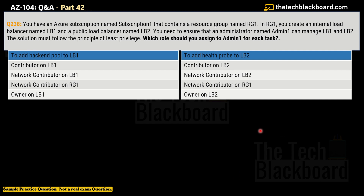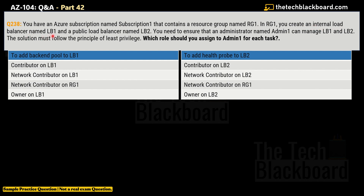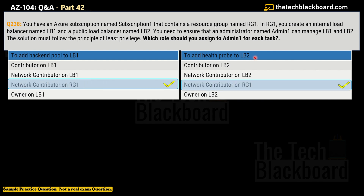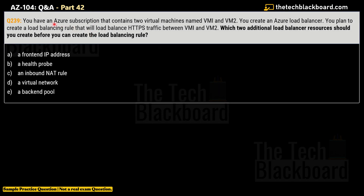Question 238: You have an Azure subscription named Subscription 1 containing resource group RG1, an internal load balancer named LB1, and a public load balancer named LB2. You need to ensure that an administrator named Admin 1 can manage LB1 and LB2, following the principle of least privilege. The two tasks are: add a backend pool to LB1 and add a health probe to LB2. The correct answer for both tasks is the Network Contributor role on RG1.